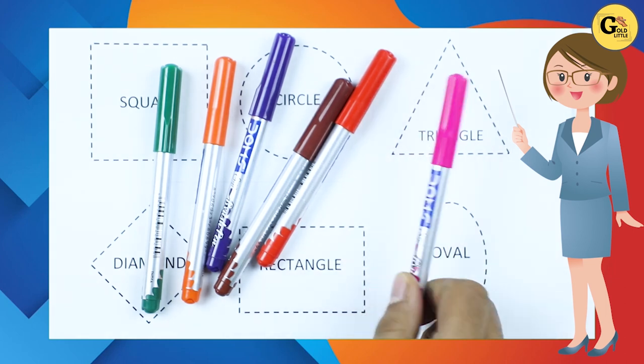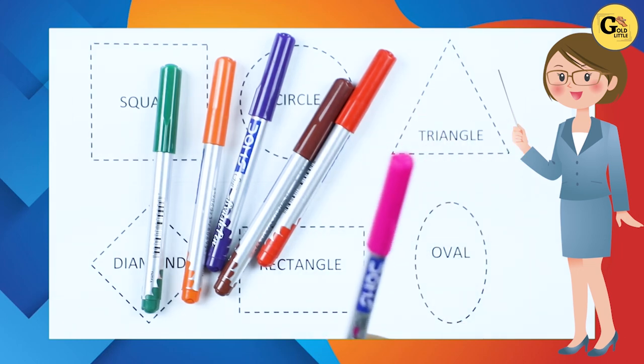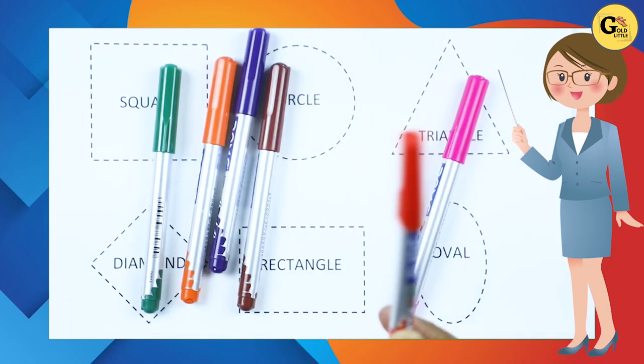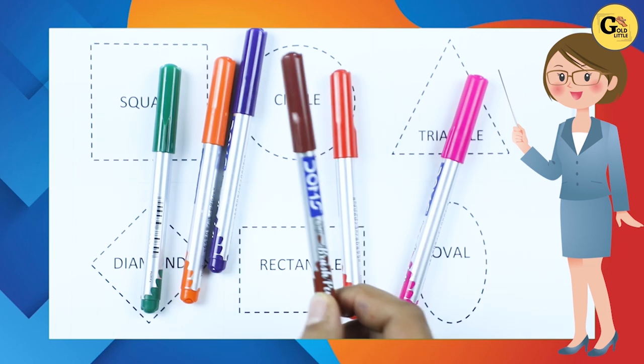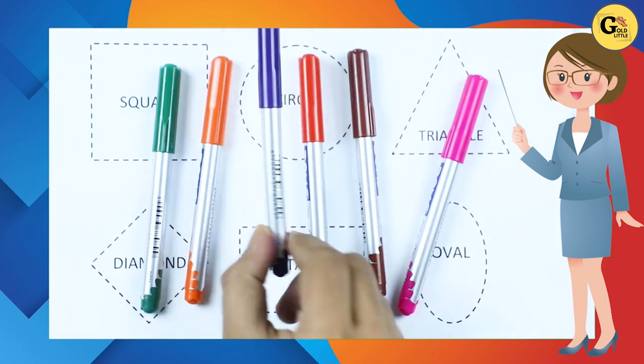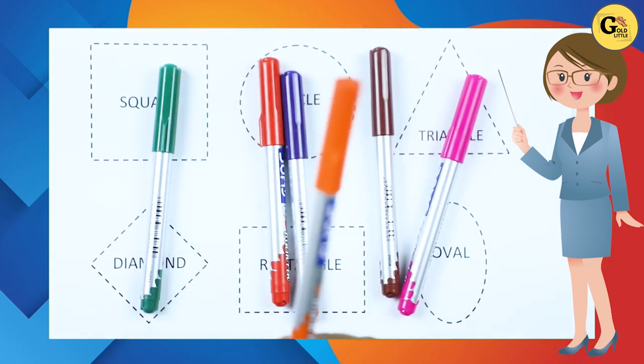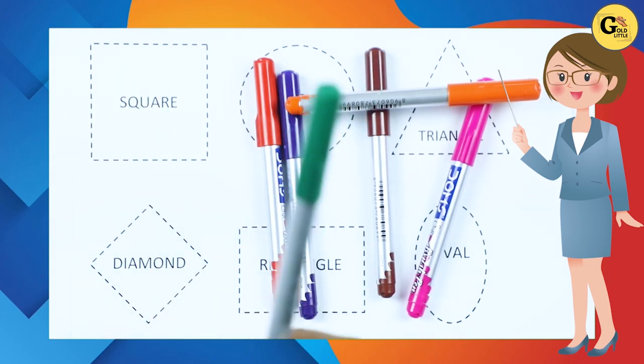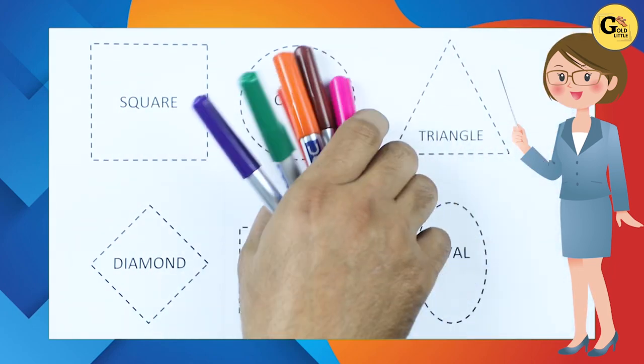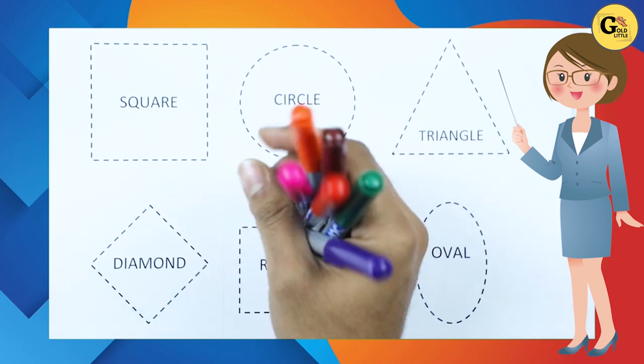With some colors. It's a pink color, red color, brown color, purple color, orange color, green color. So let's start. We learn shapes.